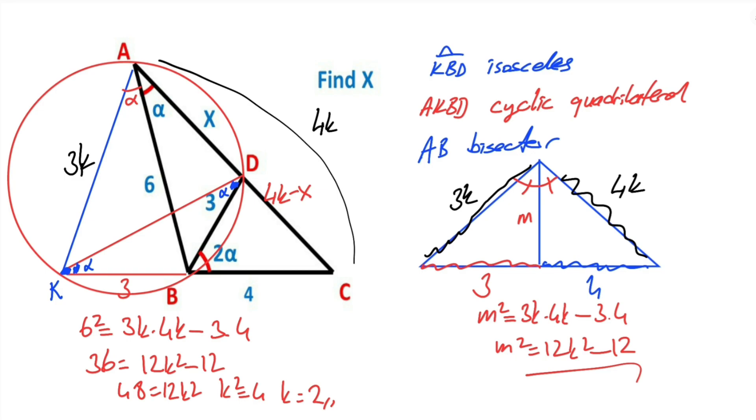If k equals 2 units, that means length of DC must be equal 8 minus x.